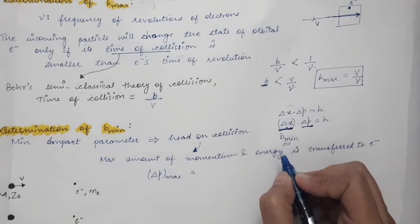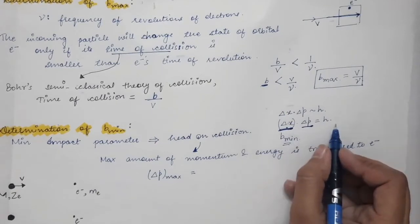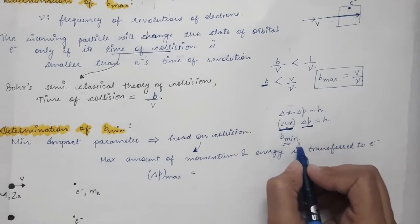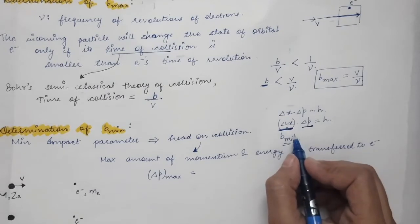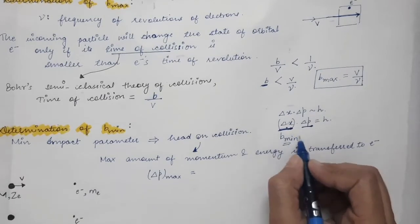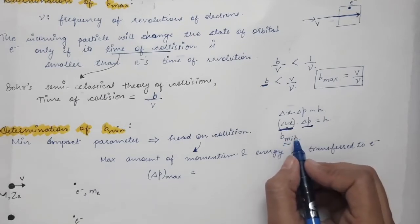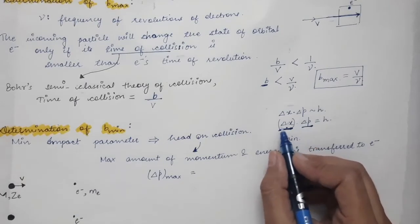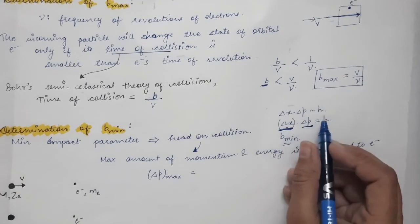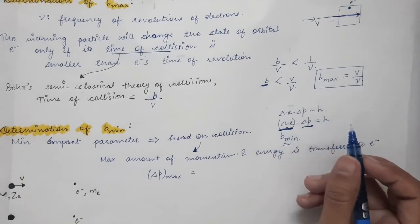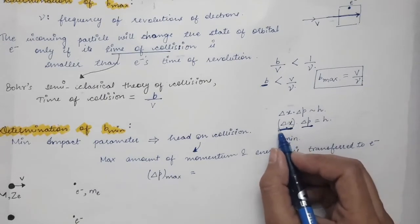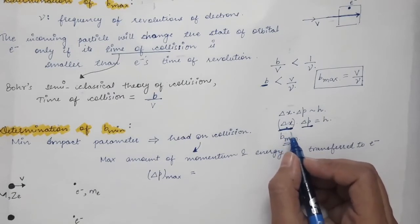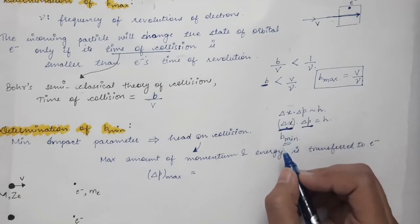The minimum impact parameter cannot be zero, because according to the uncertainty principle Δx cannot be zero — that would make the uncertainty in momentum infinite. So b_minimum must be a finite, non-zero value. We use b_minimum · Δp_max = h to find b_minimum once we determine the maximum possible change in momentum.